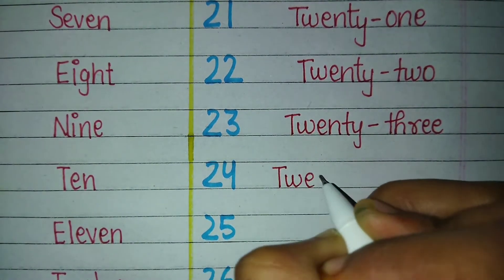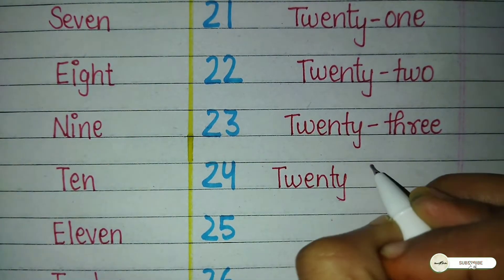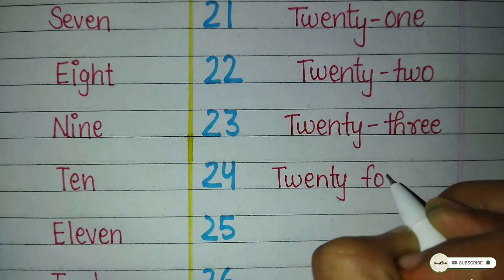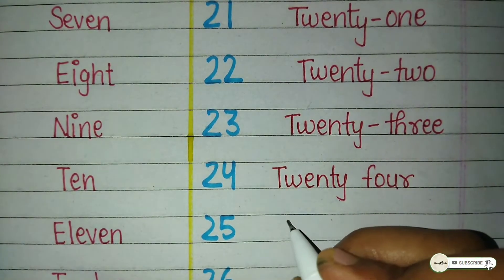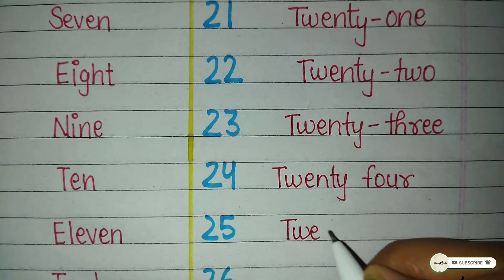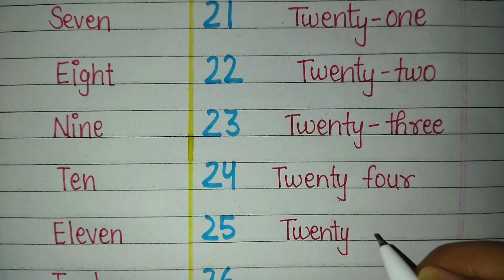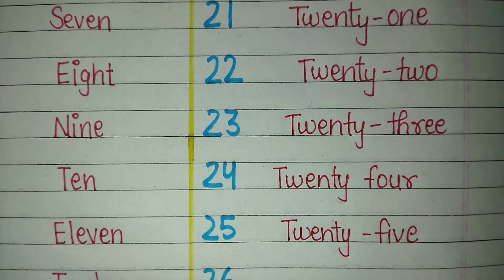Twenty-four — T-W-E-N-T-Y — 20, F-O-U-R — 4 — 24. Twenty-five — T-W-E-N-T-Y — 20, F-I-V-E — 5 — 25. Twenty-six — T-W-E-N-T-Y — 20, S-I-X — 6 — 26.